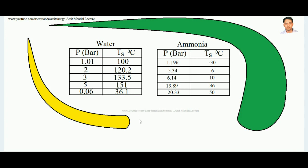If I ask you what is the boiling point of water, your answer might be 100 degrees centigrade, but this answer is wrong. You must ask what pressure is applied over it, because water doesn't have any fixed boiling point - the boiling point depends upon the pressure applied over it. Boiling is the phase change when a liquid changes into vapor. This saturation temperature rule applies to all liquids, not just water.